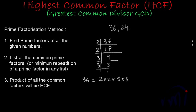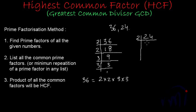And if I try to find the prime factors of 24, I will use the same method. 24 is an even number, so it will be divisible by 2. 2 × 12 = 24.